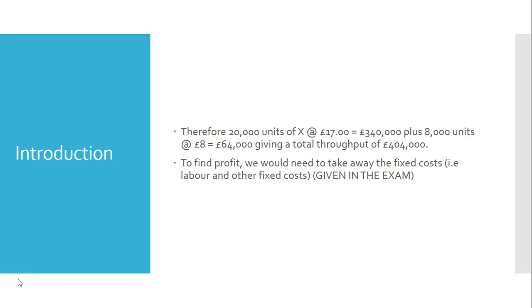So what have we done so far? We have looked at the traditional scenario of trying to decide which product to make using contribution, but then we took that a step further into modern manufacturing where labor is considered a fixed cost — typically supervisory and quality inspections in an automated system. The only variable cost is material, and we worked out throughput — what's coming through after dealing with material cost.